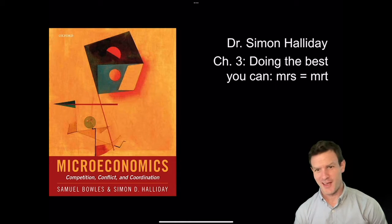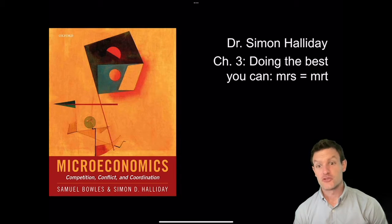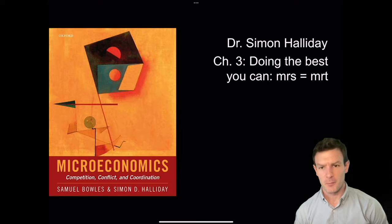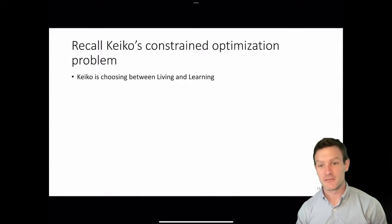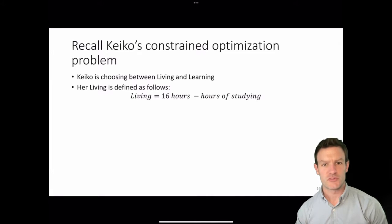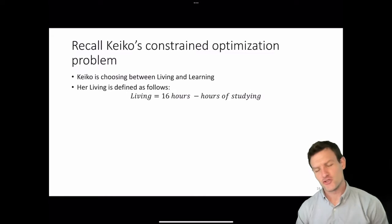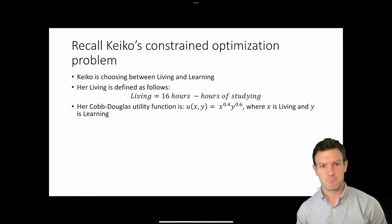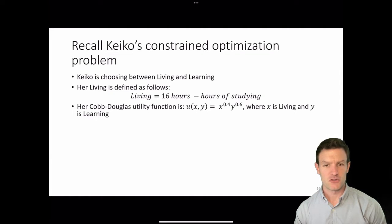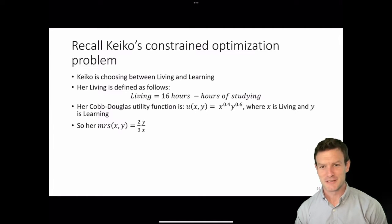Here we're going to be talking about doing the best you can — setting the marginal rate of substitution equal to the marginal rate of transformation. This is all about Keiko's constrained maximization problem. Keiko is choosing between living and learning. Her living is defined as 16 hours minus the hours she spends studying — 24 hours in the day minus 8 hours for sleep. Studying produces learning, so her Cobb-Douglas utility function is u(x,y) = x^0.4 * y^0.6, where x is living and y is learning. This means her marginal rate of substitution is equal to (2/3)(y/x).